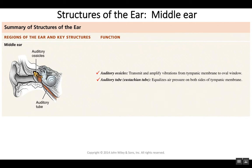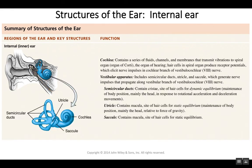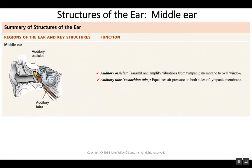The auditory ossicles are the smallest three bones in the human body — they're the size of a grain of rice. Their job is to transmit and amplify the vibrations coming from the tympanic membrane and transfer these vibrations to what's known as the oval window.